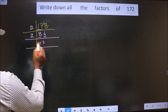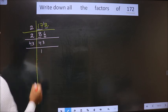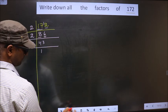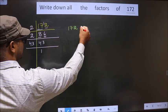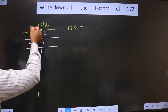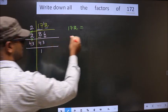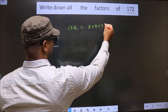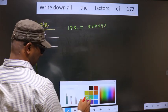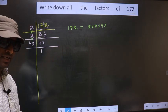Now, here we got 43. 43 is a prime number. So we take 43 once 43. So now, 172 is equal to the product of these numbers. That is 2 into 2 into 43. Okay.